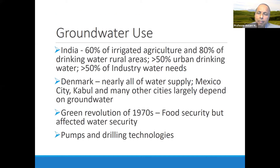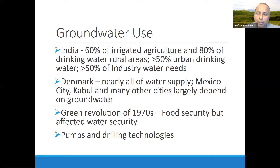About 60 percent of irrigated agriculture in India depends on groundwater. Eighty percent of drinking water in rural areas comes from groundwater, and more than 50 percent of drinking water in urban areas and industrial water needs are from groundwater. Countries like Denmark, Mexico City, Kabul, and many other cities largely depend on groundwater. We had the Green Revolution in the 1970s, and groundwater played a big role in achieving food security — but at the same time, it affected water security.